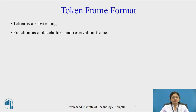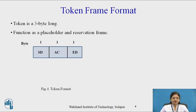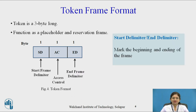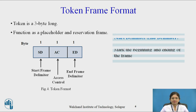Now let's see what a token is and the frame format of the token. A token is a 3-byte long frame that functions as a placeholder and reservation frame. This is the format of the token: SD stands for start frame delimiter, AC is the access control, and ED is the end frame delimiter. The start delimiter and end delimiter mark the beginning and end of the frame.